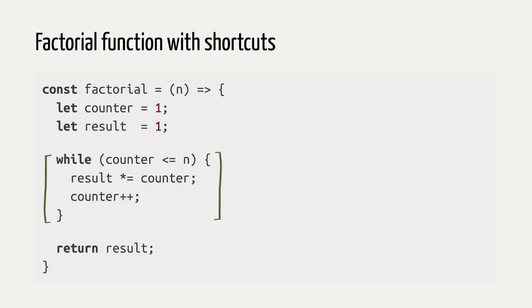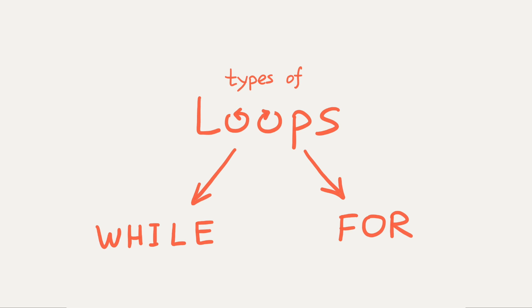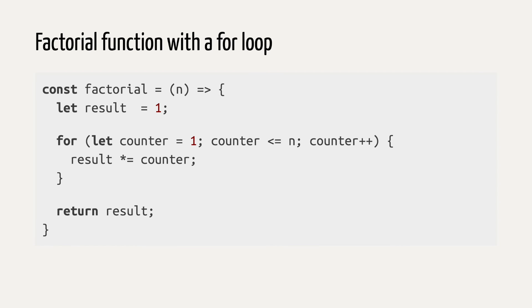Having a loop — this repeating code — with a counter controlling the repetition is a common thing in programming. That's why, in addition to while loops, there are also for loops. They have built-in counters. Here is the same factorial function, but with a for loop instead of a while loop.